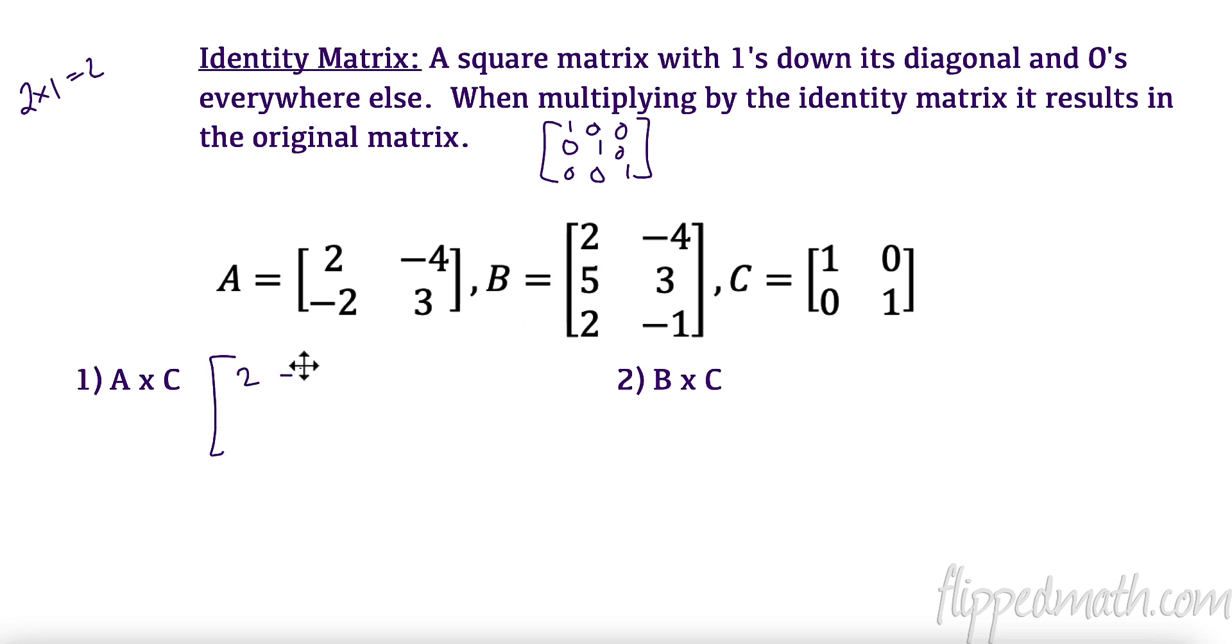So, for example, I have a 2x2 here, but I could have a 3x3, right? Ones down the diagonal, right here, zeros everywhere else. Let's see what happens when we multiply by an identity matrix. So, we're going to do this one by hand. You really need to be able to do 2x2 matrix multiplication by hand.